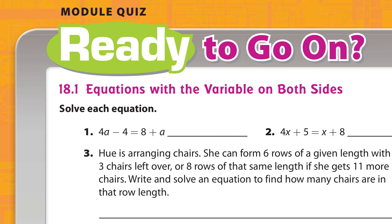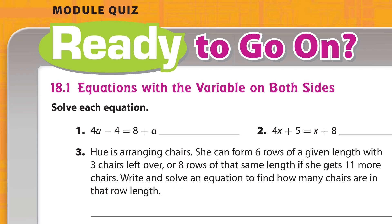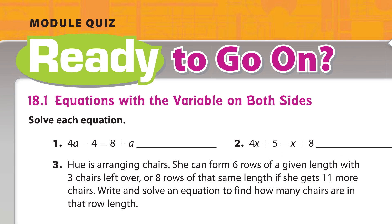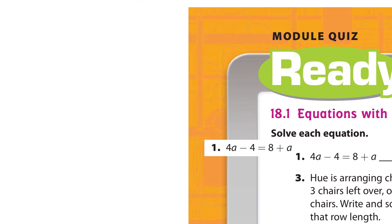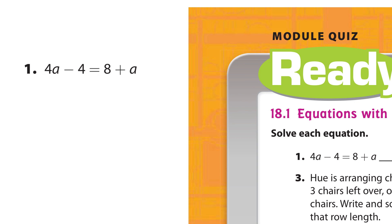Hi, welcome to Module 18. This is for Math 7 Accelerated. Let's get started with the first question — solving this equation. I'm going to copy it and bring it over to the side to give myself some room. What you need to do is isolate the variable 'a'.